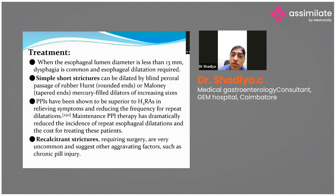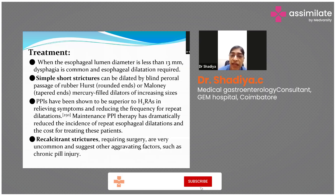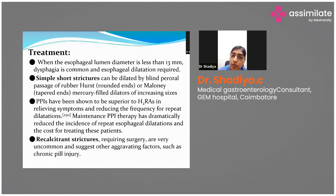For treatment of strictures, if the diameter is less than 13 mm the patient will have dysphagia, so we have to dilate the strictures. Simple short strictures can be dilated with a bougie, and after dilation the patient should be maintained on proton pump inhibitors or H2 receptor antagonists to prevent development of a recurrent stricture.